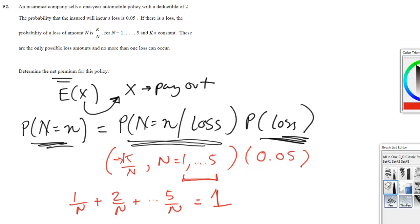Oh, I apologize, this is not the way it's supposed to be written. It is k over 1 plus k over 2 plus all the way up to k over 5. Sorry for the confusion.